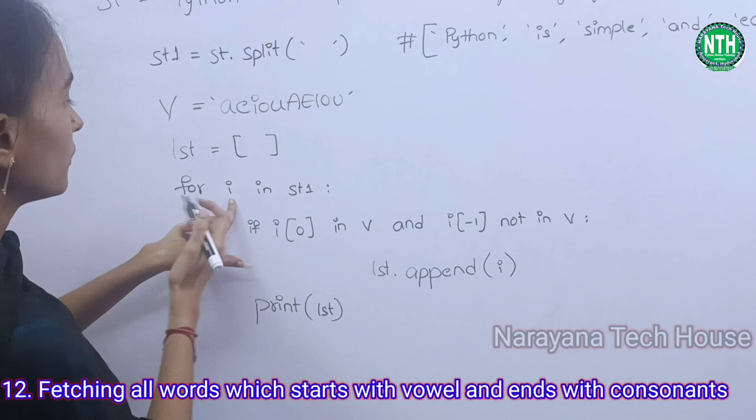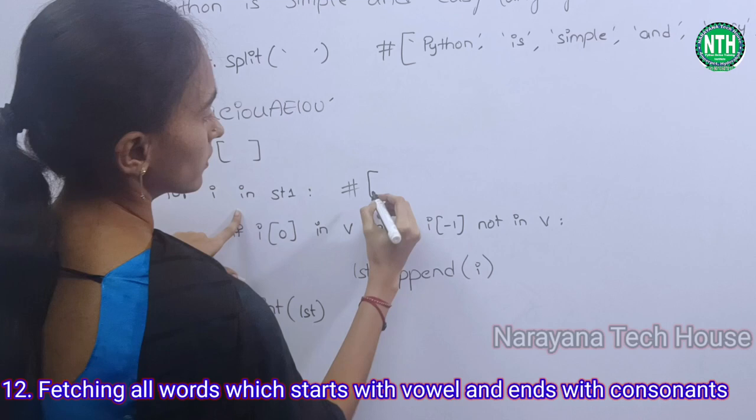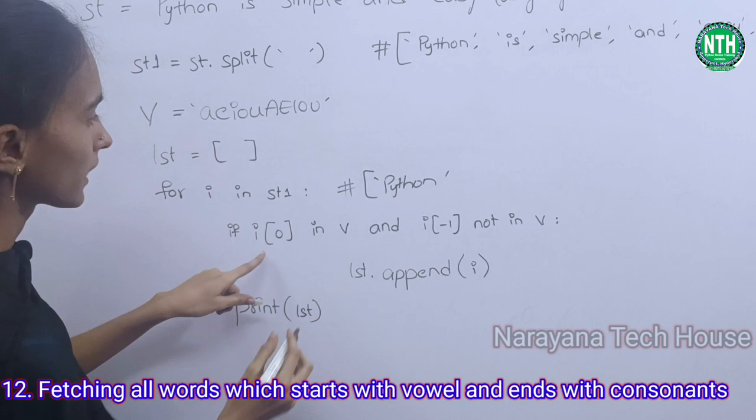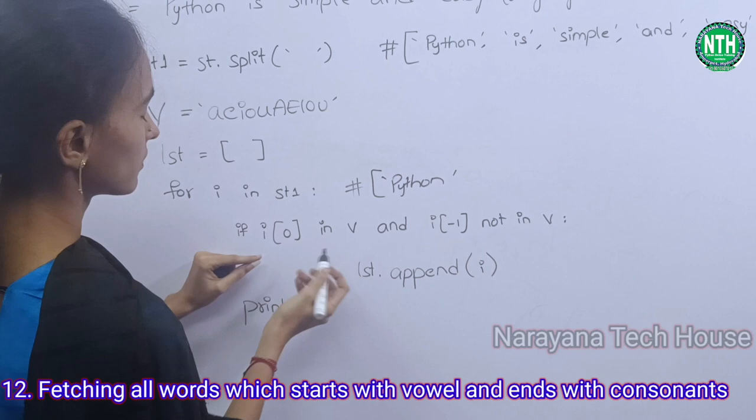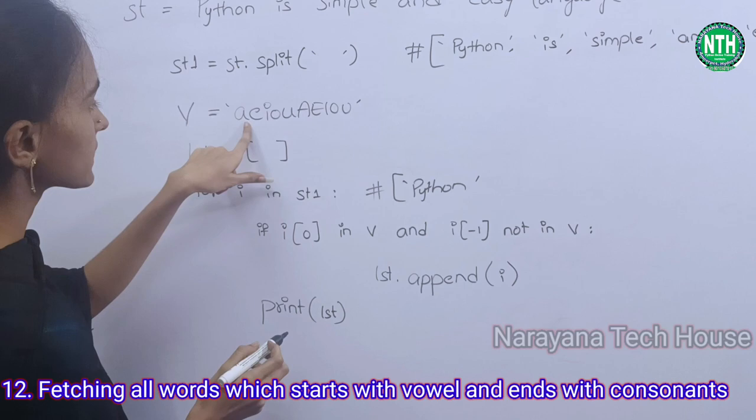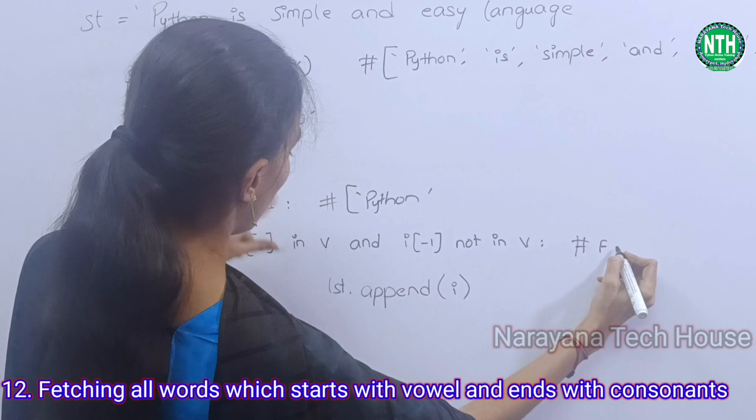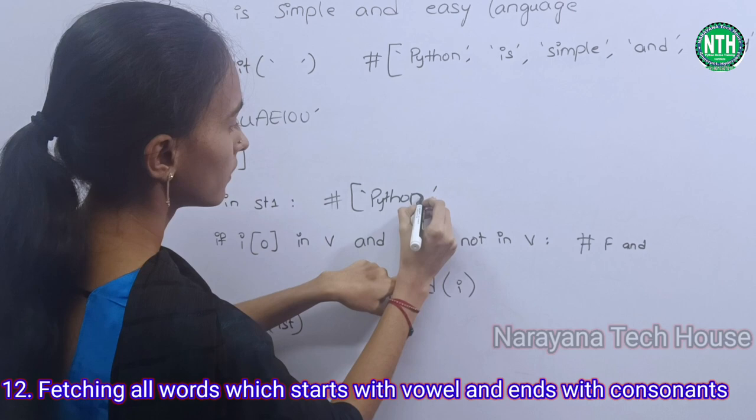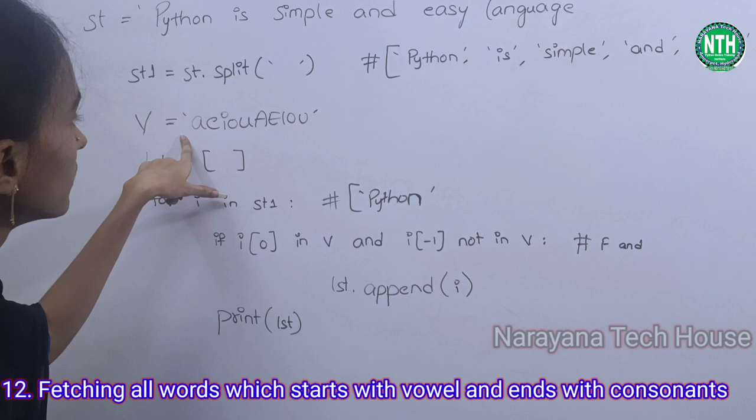First, i means 'python'. The first word is 'p' — i[0] = 'p'. Is 'p' in V (vowels)? No, it is not there, so this condition is false. And i[-1] means 'n' — minus 1 is not in V, it is also false.